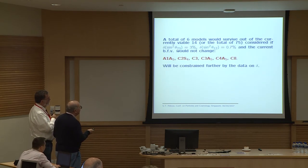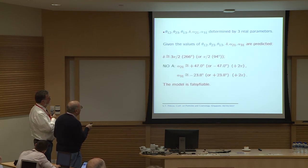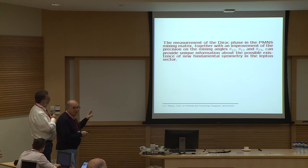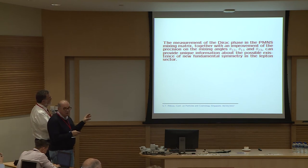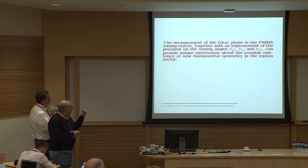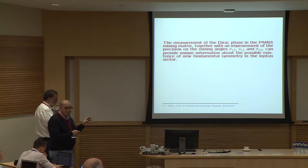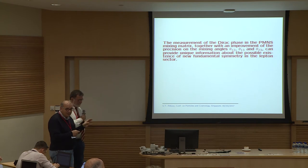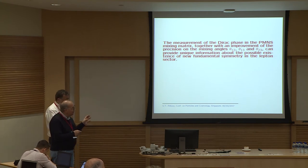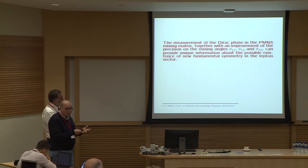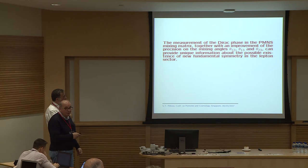In conclusion, what I would like you to take from this talk is that the measurement of the CP-violating phase δ in the PMNS matrix, and the improved precision of the measurement of neutrino mixing angles, can have much more important implications for understanding the origin of the observed pattern of neutrino mixing than just determining four more parameters experimentally. It can provide truly unique information about the existence of a new fundamental underlying symmetry in the lepton sector.